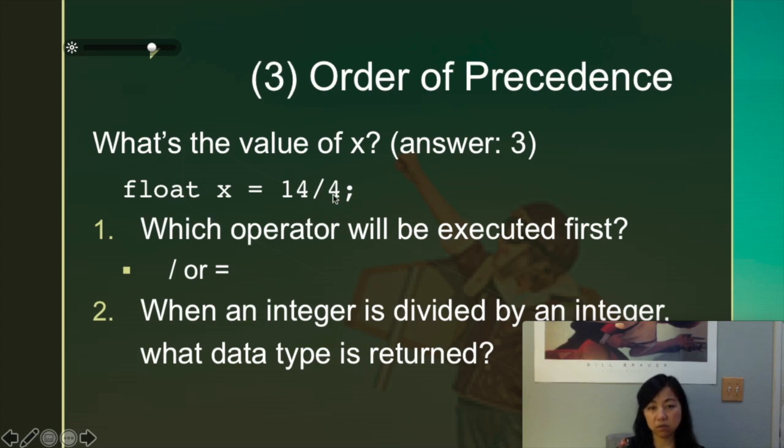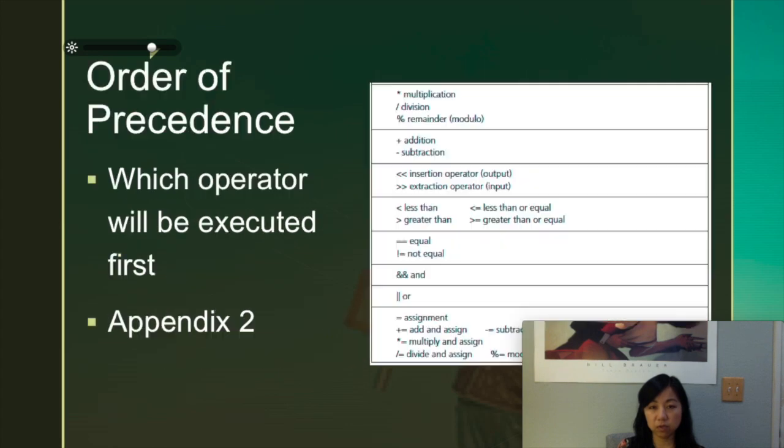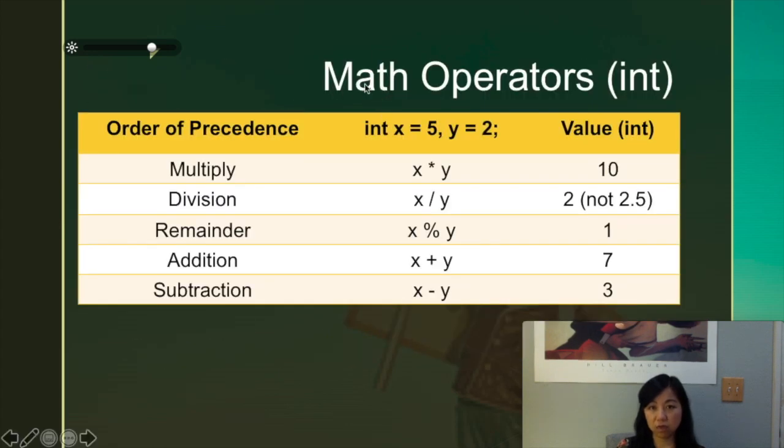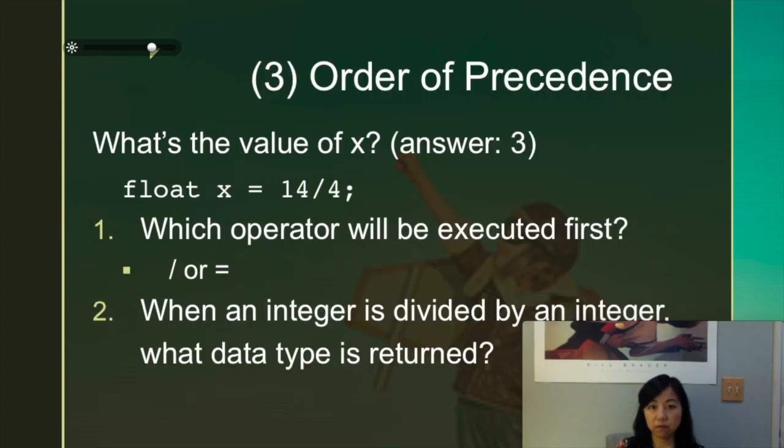14 is an integer, 4 is an integer. When the integer is divided by an integer, it will only give you the whole number. It will return only the whole number, which we also talked about earlier in the math operators. So when 5 is divided by 2, it will return 2 and not 2.5, because it's understood as an integer divided by an integer. Therefore, 14 divided by 4 is going to be 3 with remainder 2, but the remainder 2 will be ignored in this case because it's not a percentage. So now 14 divided by 4, a 3 is returned. So that 3 is going to be assigned to X, even though X is a float, but the value is still 3.